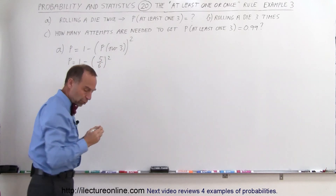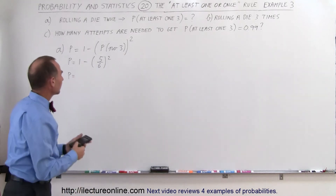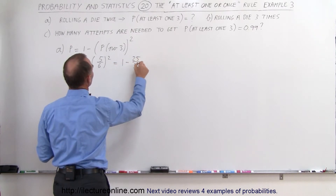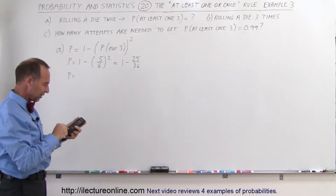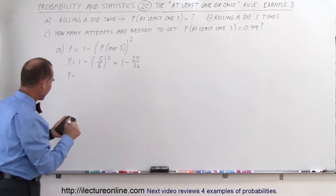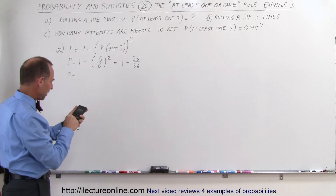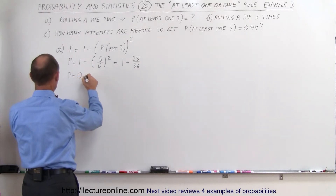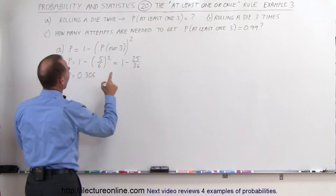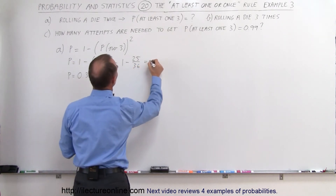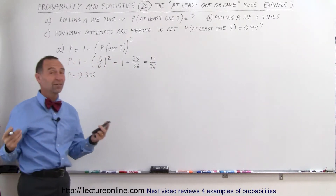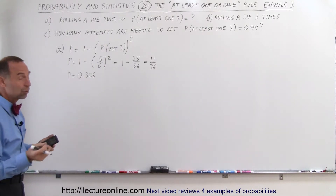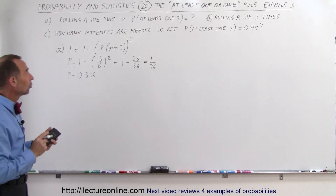So the probability is going to be equal to — we can say this is equal to one minus 25 over 36. So 25 divided by 36, subtract that from one, and we get a probability of 0.306. Or we could say that this is equal to 11 over 36. If we want to leave it as a fraction, we write it as 11 over 36. As a decimal it's 0.306 — a little bit more than 30% probability that when we try two times we'll get at least one three.